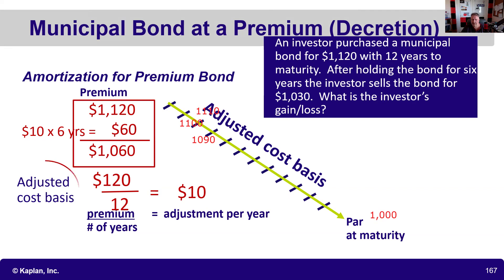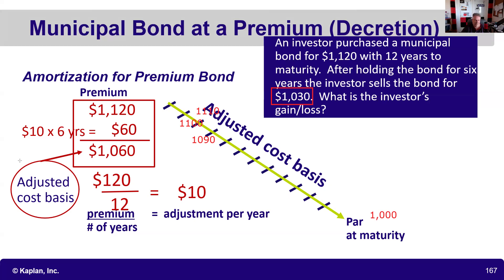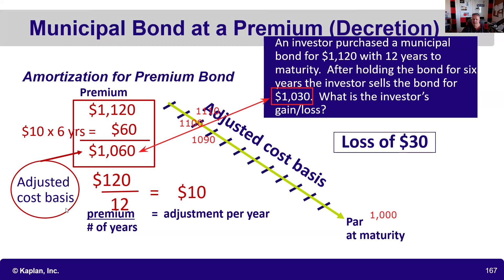That adjusted cost basis alone could be the test question — they might just ask what the adjusted cost basis is after six years, and the answer would be $1,060. But here they go a step further: your cost basis is $1,060 and you sold it for $1,030, so you have a $30 loss. It would be very easy to miss this by saying 'I bought it for $1,120 and sold for $1,030,' but you must compare the adjusted cost basis to the sale price.